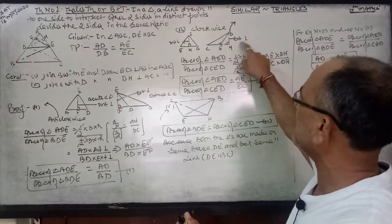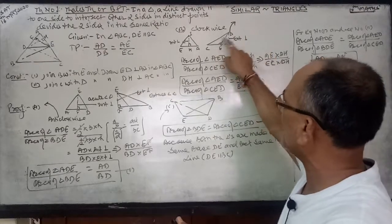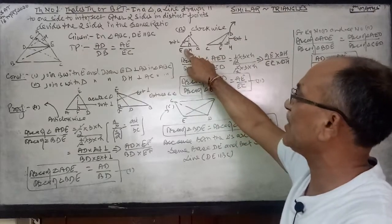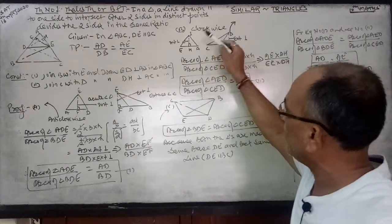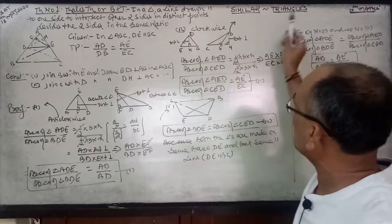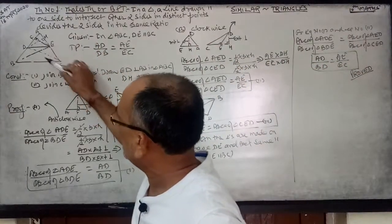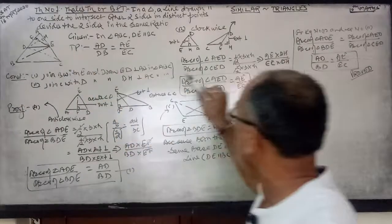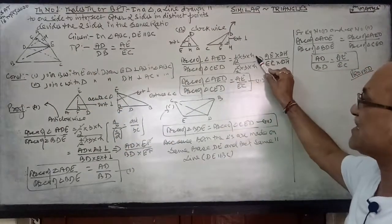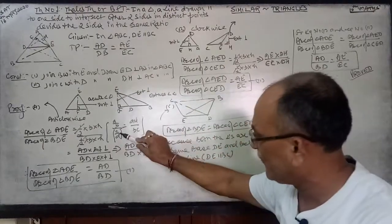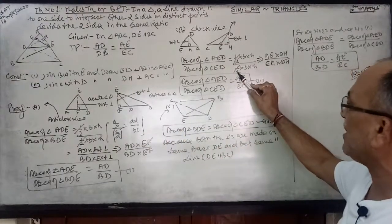Because this CED is obtuse angle and this is acute angle. So now, by looking at similarities, area of triangle ADE over area of triangle CED equals AE over CE. So half into base into height over half into base into height, by same formula, half is cancelled by half.